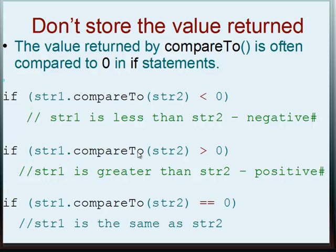So here we have if string1.compareTo(string2) is less than zero, string1 is less than string2, negative. Similar here, if string1.compareTo(string2) is more than zero, string1 is greater than string2, positive. And if they're the same, equals zero, string1 is the same as string2.